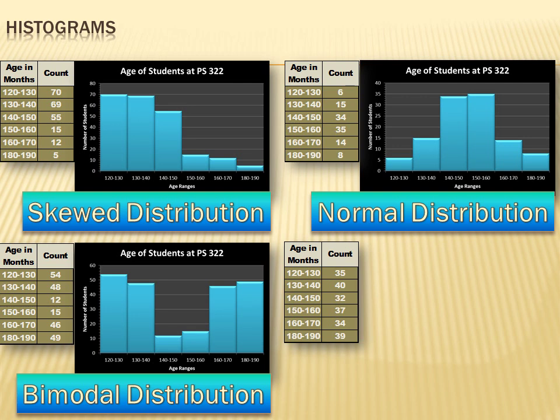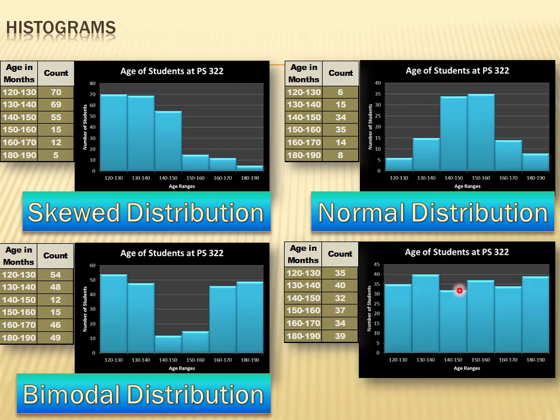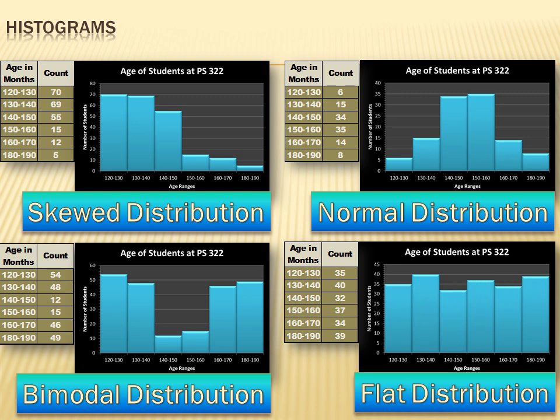Now on this distribution, the counts are all pretty much the same. They're all, it's kind of a flat line that would tie those together. And it looks kind of like a flat line distribution. And we call it a flat distribution.